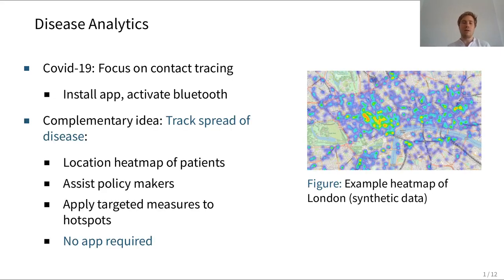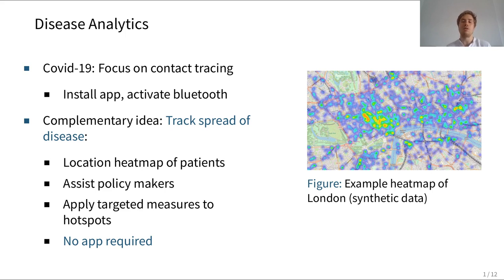When we wanted to help contain the spread of the disease, we thought of a different solution which does not rely on an app. What we wanted to do is create a heat map which aggregates the location data of infected individuals. This heat map is intended to keep track of the spread of the disease and help policymakers take measures to contain it — for example, targeted measures for closing off public places inside hotspots. Crucially, our approach does not rely on the population installing any apps; they just need to carry their mobile phones.